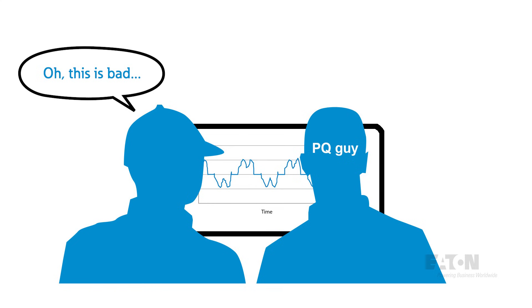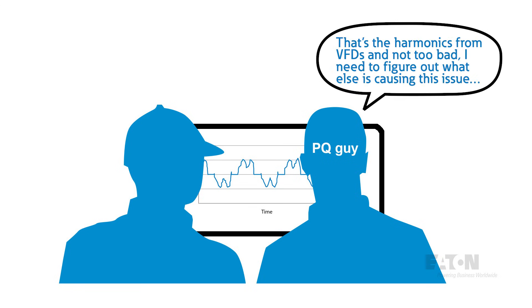The bottom line is that in order to say we have a problem, there must be some actual issue or effect. I've seen many newcomers to power quality analysis that look at a waveform and get very excited, but many times it's just new or different to them and may not be unusual at all, like harmonics. So let's summarize the starting point, and then we'll look at power quality pitfalls and troubleshooting tips.